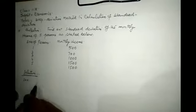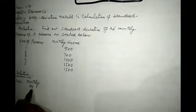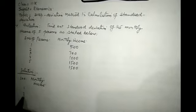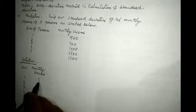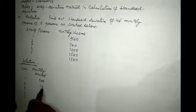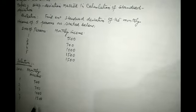We will write serial number, monthly income. Serial number is 1, 2, 3, 4, 5. Monthly income is 500, 700, 1000, 1500 and 1500.